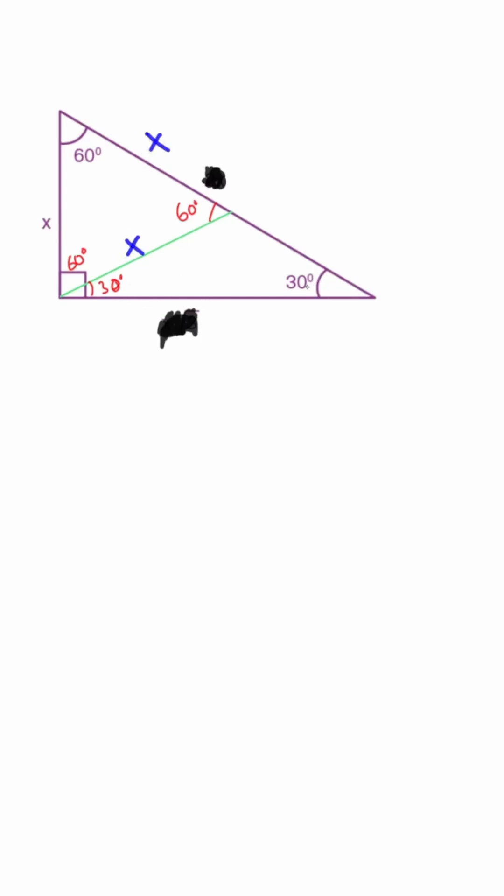But here, we got 30 and 30 degrees, so that's an isosceles triangle. So if this is x, this part must also be an x, which gives us 2x here.